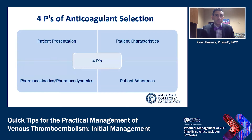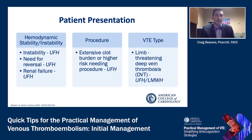When it comes to anticoagulant selection, you want to think of the four Ps: the patient's presentation, patient characteristics, pharmacokinetics and pharmacodynamics, and patient adherence. For patient presentation, you want to take into account hemodynamic stability or instability, any planned procedures, and the VTE type.